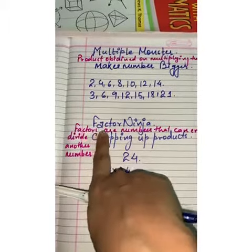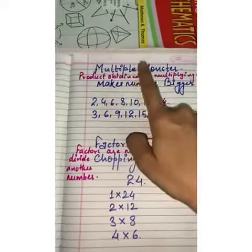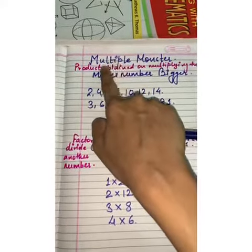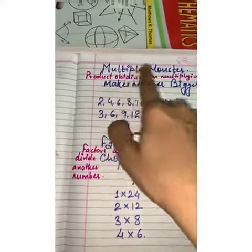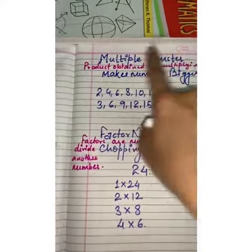And factor as factor ninja. Why so? Because, first we will understand the meaning of multiple. What is the meaning of multiple? Multiple, it means when we multiply two numbers and we will get one number that is called as multiple.